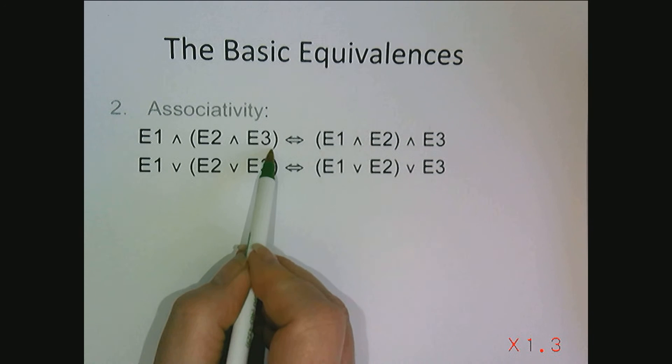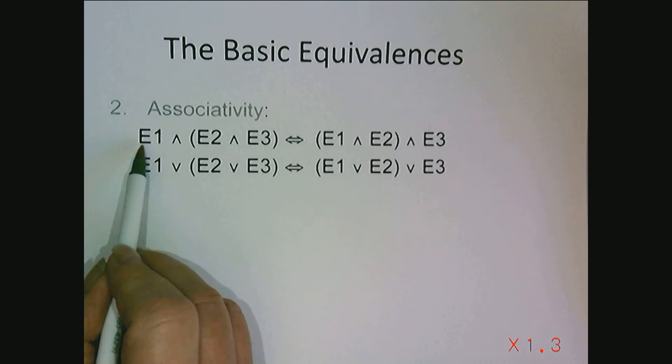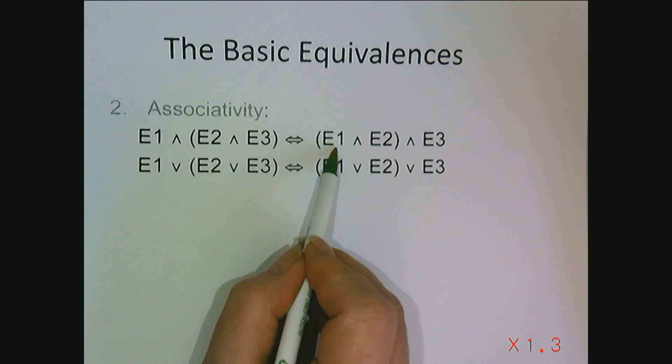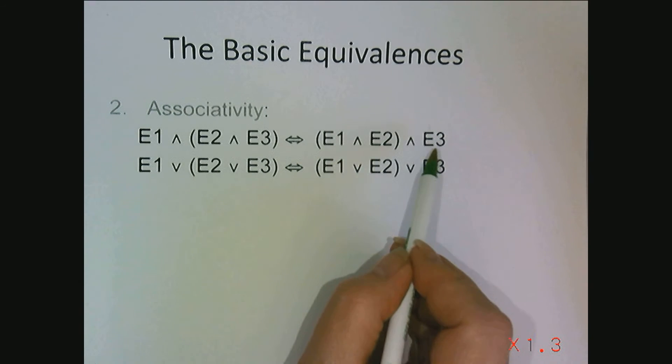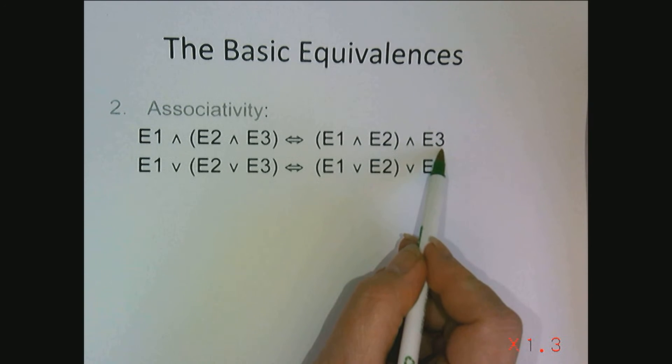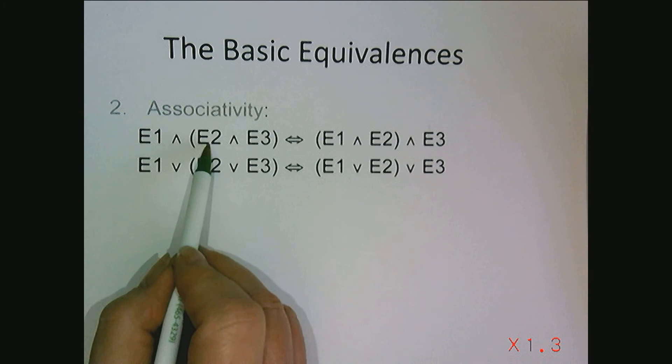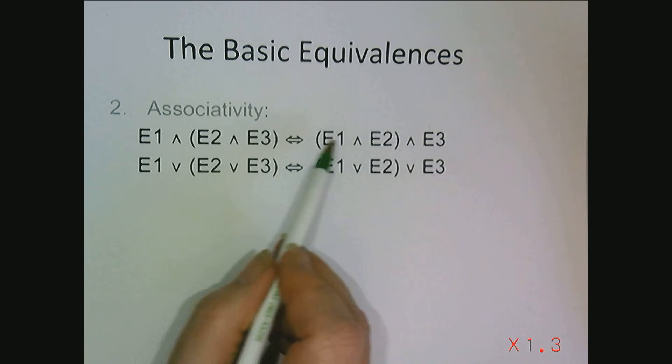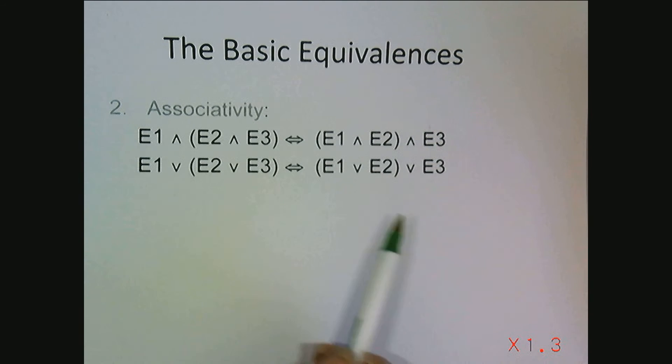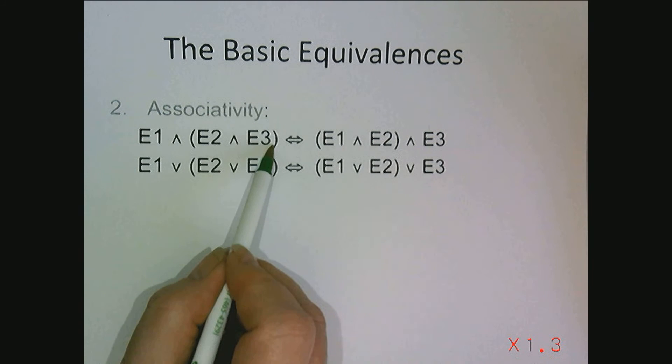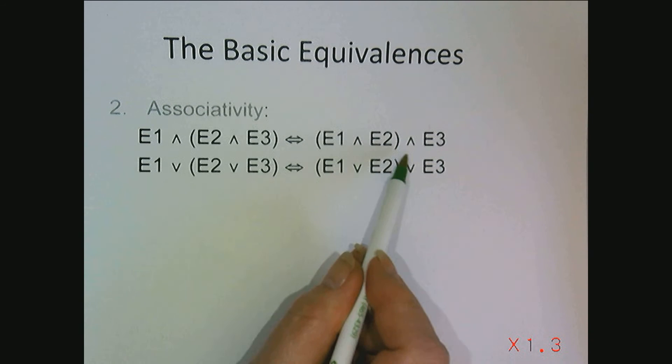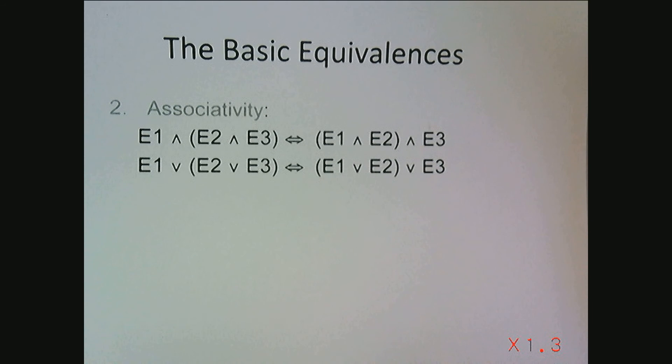E1 and the quantity E2 and E3 is equivalent to the quantity E1 and E2 and E3. And so it doesn't matter the grouping or the operation we perform first. So we don't really need the parentheses to tell us which one of these operators we need to perform first and second, or anywhere in the string.